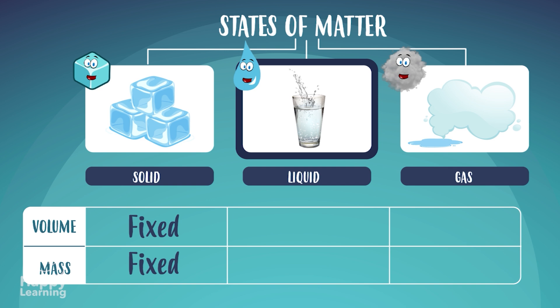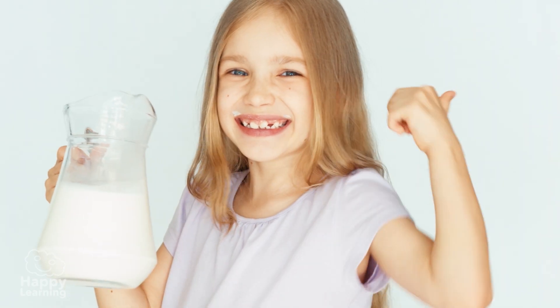Liquid state is characterized by having a fixed volume and variable size. Liquids take the container's shape, like this glass or jug.